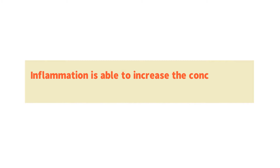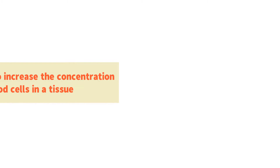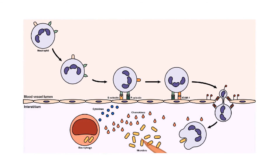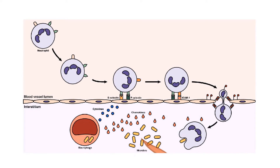Number 2. Inflammation is able to increase the concentration of white blood cells in a tissue. As macrophages secrete chemotactic molecules in the injured tissue, there is a subsequent increase in concentration of chemotactic molecules in the immediate area surrounding the site of the wound. These chemotactic molecules also stimulate the endothelial cells nearest the site of injury.